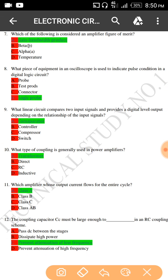Which of the following is considered as an amplifier figure of merit? Gain bandwidth product, option A is the right answer.